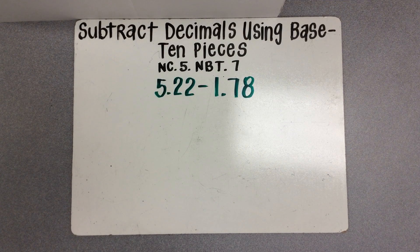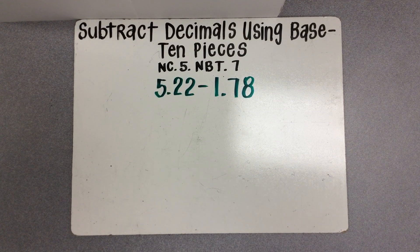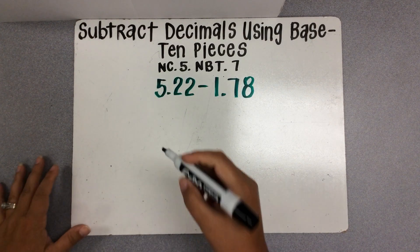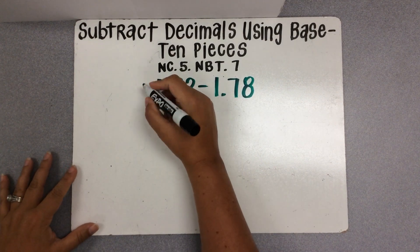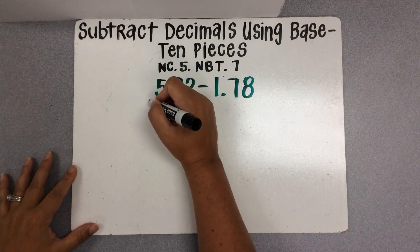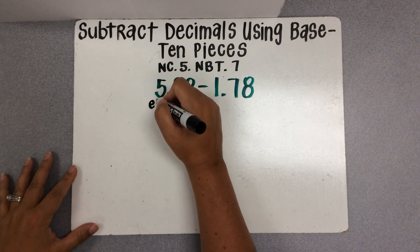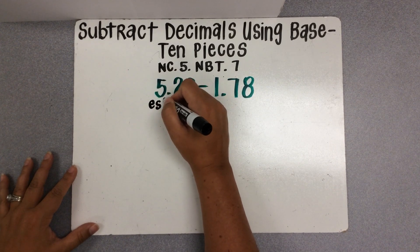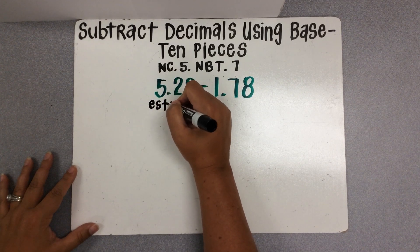Here we'll take a look at subtracting 1 and 78 hundredths from 5 and 22 hundredths using base 10 pieces. To begin with, we'll estimate so that we can check the reasonableness of our final answer.